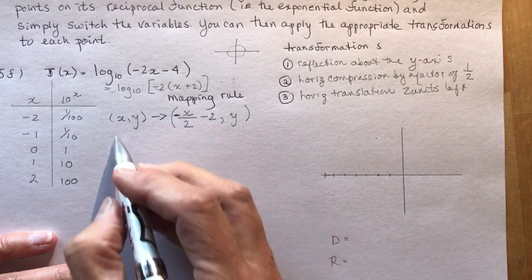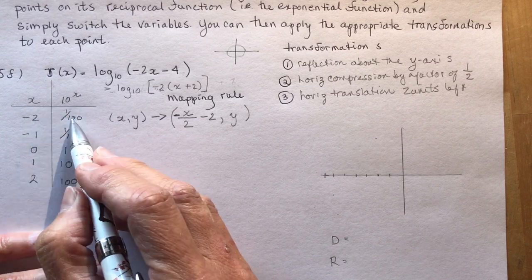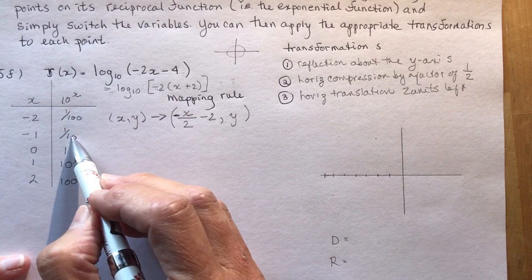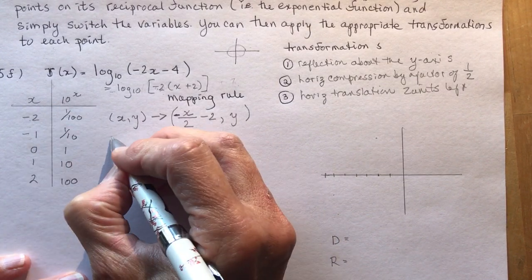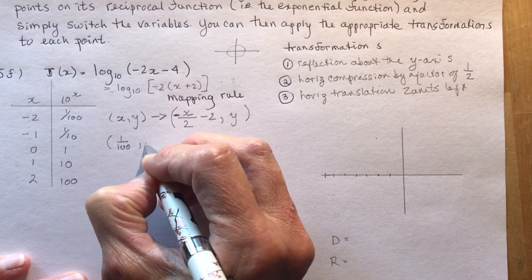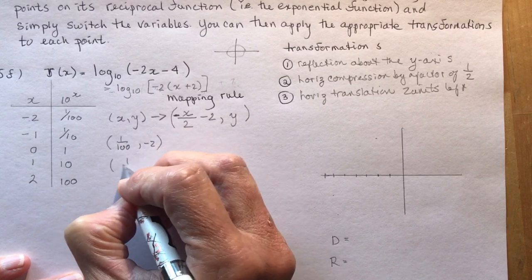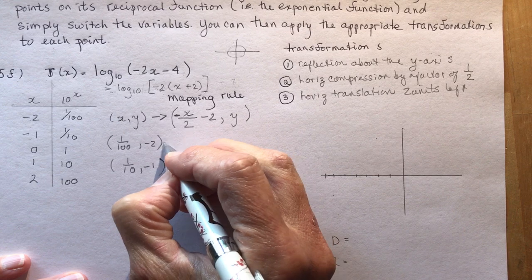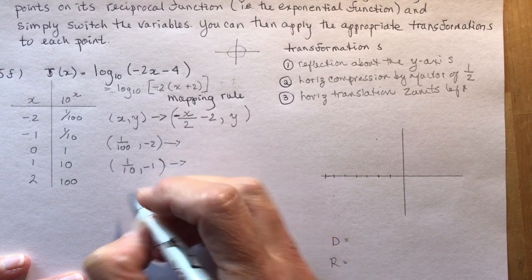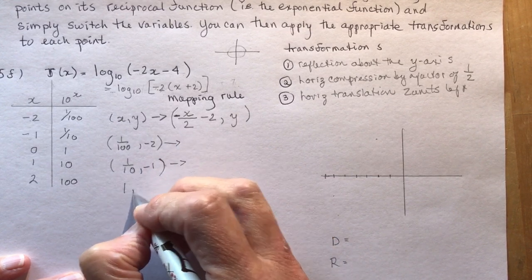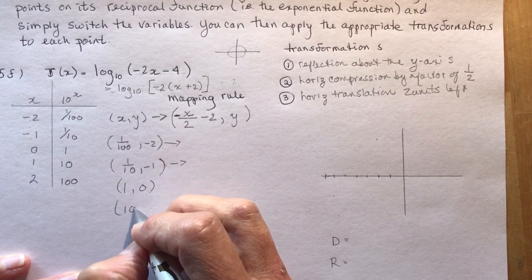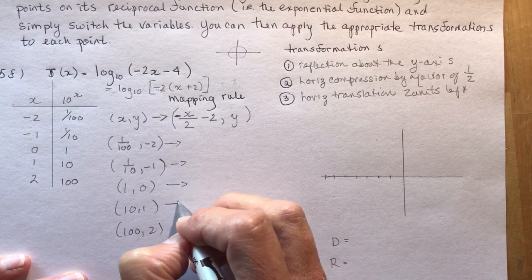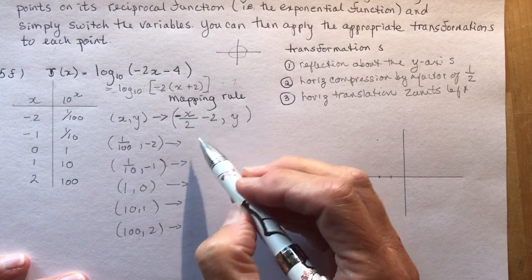So now I'm going to reverse these, because I'm going from this is the exponential points, and I want the logarithmic points. So it's going to be 1 over 100 and minus 2. And 1 over 10, minus 1. And to each of these points, I'm going to apply this transformation. 1 over 10, 1 and 0, 10 and 1, and 100 and 2. So I've got my points all listed. I'm going to apply this transformation.